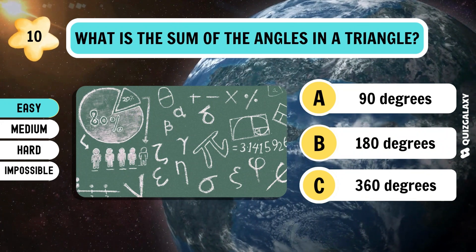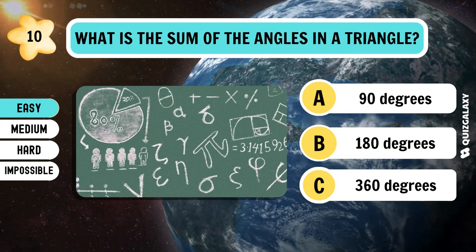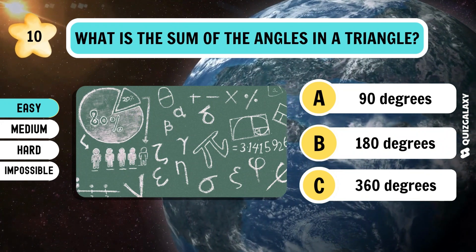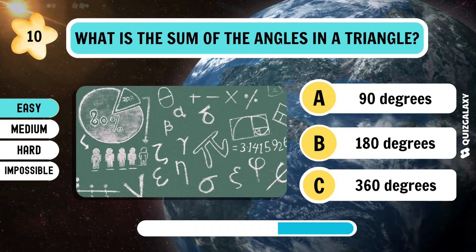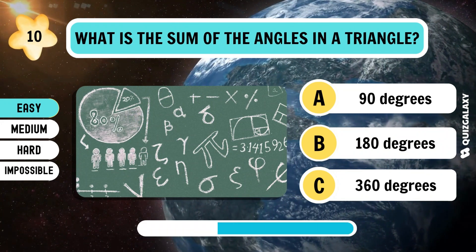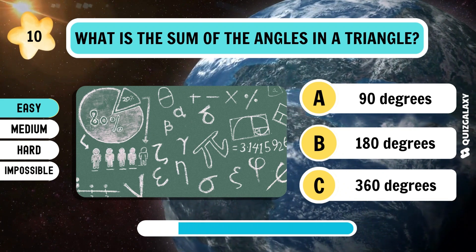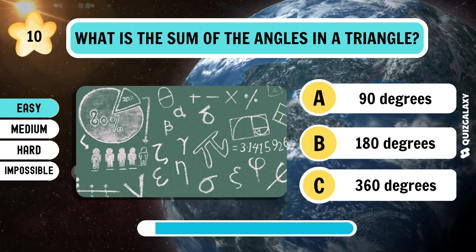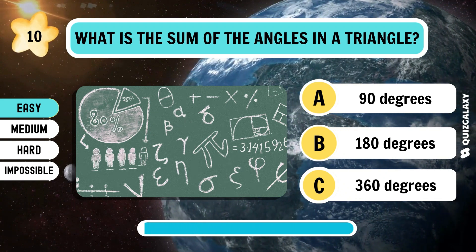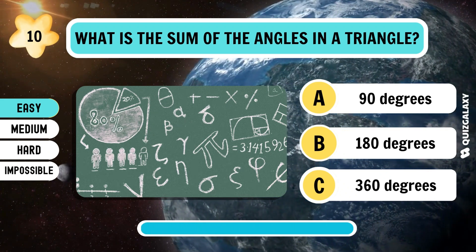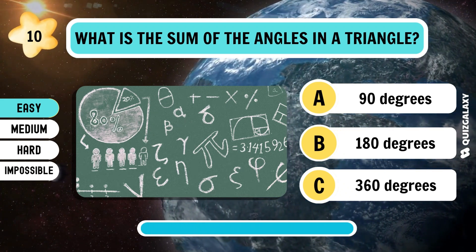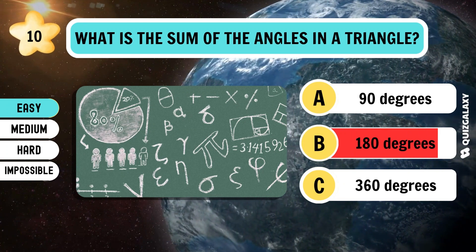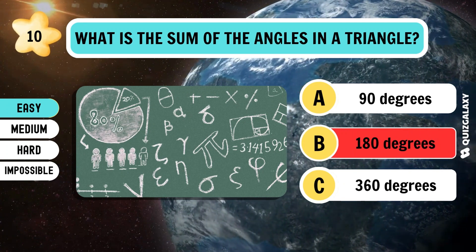What is the sum of the angles in a triangle? 180 degrees.